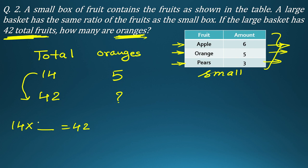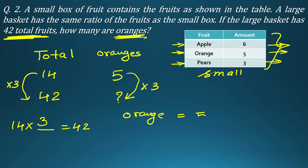14 multiplied by 3 gives 42. So apply the same multiplier to oranges: 5 multiplied by 3 = 15. The large basket will have 15 oranges. If the question asked about apples or pears, you would change the number accordingly.